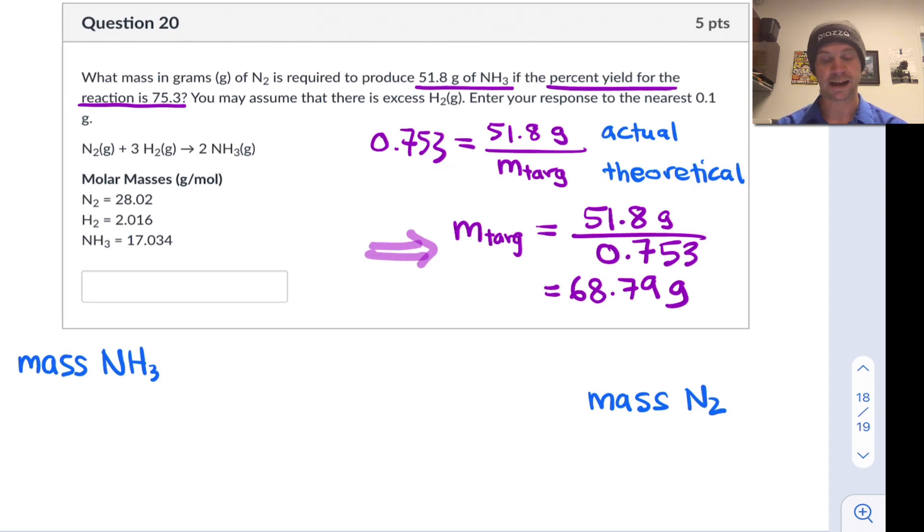How do we go from mass to mass? Well, we've got to go through mole land. And to cross over from mass to mole land, we use molar masses. And to change between numbers of moles, we use stoichiometric factors or mole-mole ratios from the balanced chemical equation.